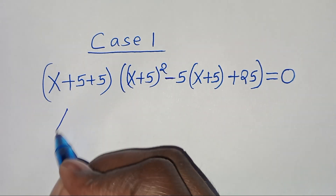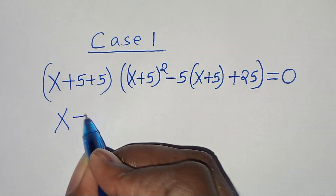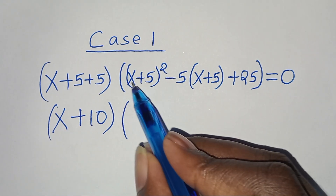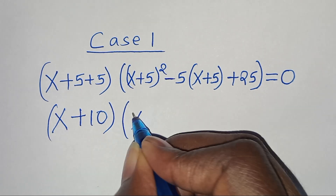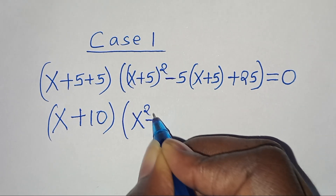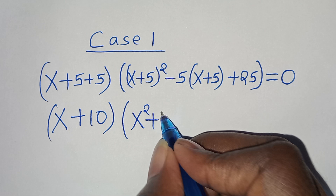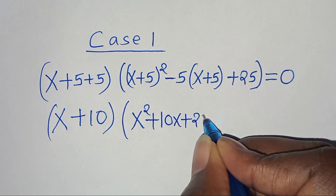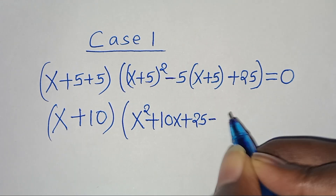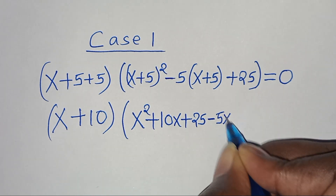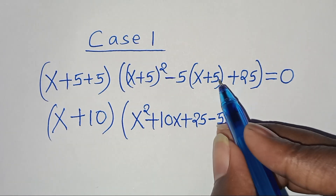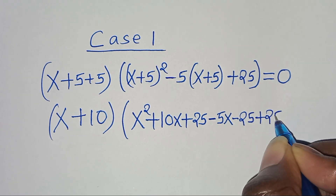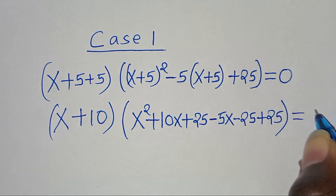Here we have x plus 10 in the first factor. In the second parentheses: x plus 5 to the power of 2 equals x squared plus 10x plus 25, then subtract 5 times x which is 5x, then subtract 5 times 5 which is minus 25, then plus 25. This equals 0.